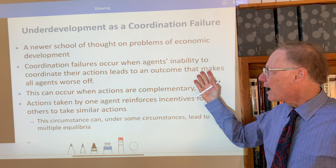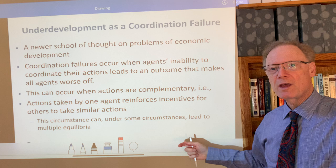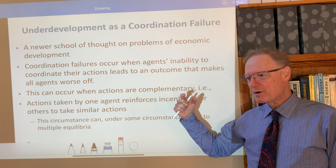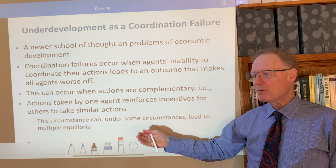Specifically, coordination failures can occur when agents, such as firms, but could be households, inability to coordinate their actions together leads to an outcome that makes all agents worse off. So in other words, there's two possible outcomes, two equilibria, one preferred, but you may not be able to get to it.